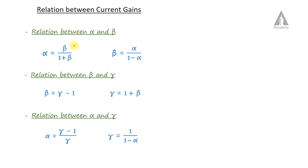Here you can see the relationship between alpha and beta. We can write alpha is equal to beta by 1 plus beta, and we can write beta is equal to alpha by 1 minus alpha. The relationship between beta and gamma can be written as beta is equal to gamma minus 1, and gamma is equal to 1 plus beta. The relationship between alpha and gamma: alpha is equal to gamma minus 1 by gamma, and gamma is equal to 1 by 1 minus alpha.